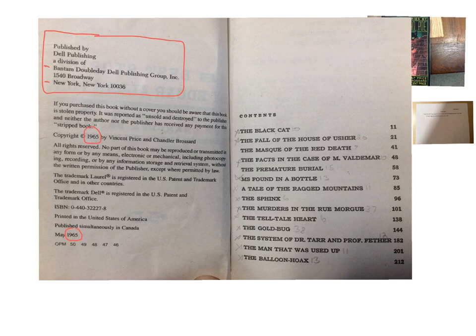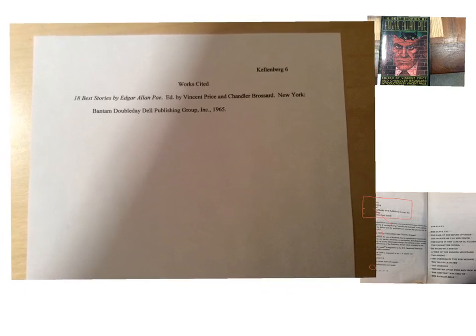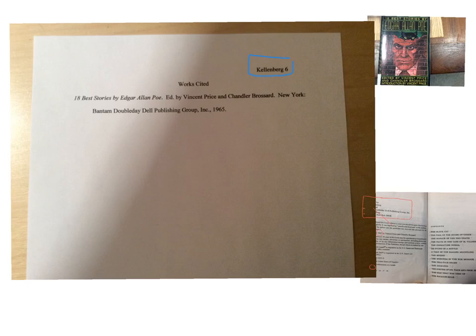We're going to use those facts from the book to put together our final page. In the top right-hand corner of the page, you want to put your last name and the page number. It's going to be a five-page paper eventually, so our Works Cited page is going to be page six. You're going to put your last name and the number six. Then you're going to double-space and put the title of the page, which is just 'Works Cited.'